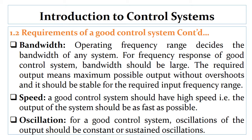Another requirement is speed. A good control system should have high speed — that is, the output of the system should be produced as fast as possible. Another requirement is oscillation, which is the process of moving back and forth regularly, like the oscillation of a fan that cools a whole room.